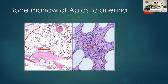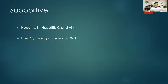Normally, the expected cellularity of the bone marrow is calculated as 100 minus your age. For example, if you are 30 years old, then 70% should be cells and only 30% should be fat. If you are getting predominantly fat in the bone marrow, then we can make a diagnosis of aplastic anemia. Supportive tests include Hepatitis B, Hepatitis C, and EBV serology. Sometimes we also do autoimmune workup like ANA, and flow cytometry to rule out PNH.